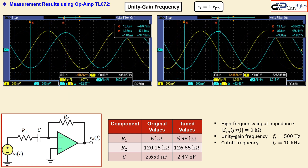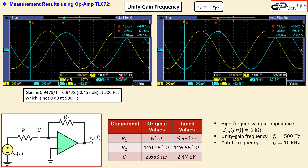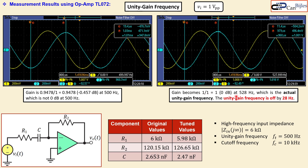For the unity gain frequency measurement, at 500 Hz the output is approximately 948 mV peak-to-peak (input is 1 V peak-to-peak), so 0 dB is not yet reached. The frequency at which 0 dB is actually achieved is 528 Hz, giving an error of 28 Hz compared to the 500 Hz specification.